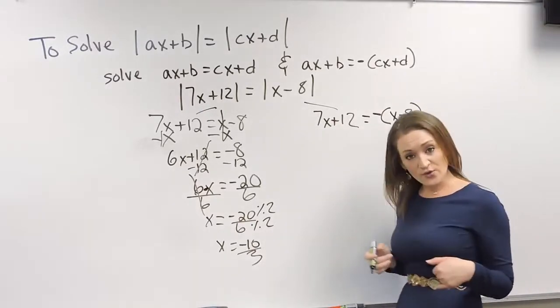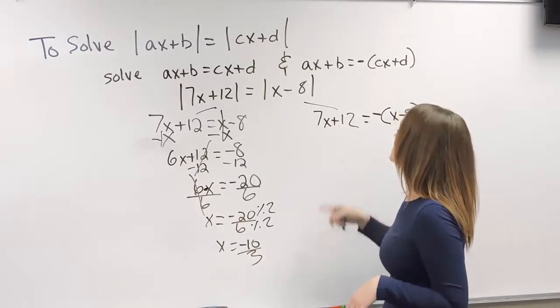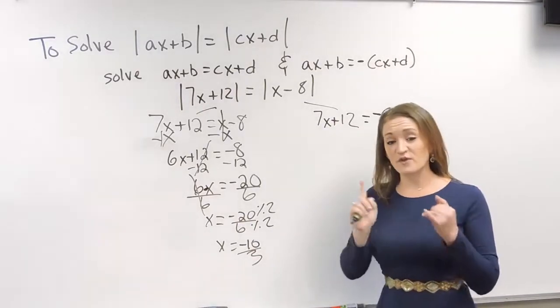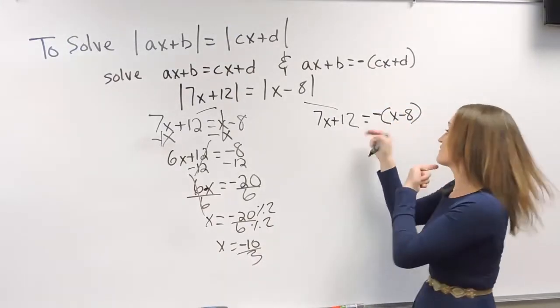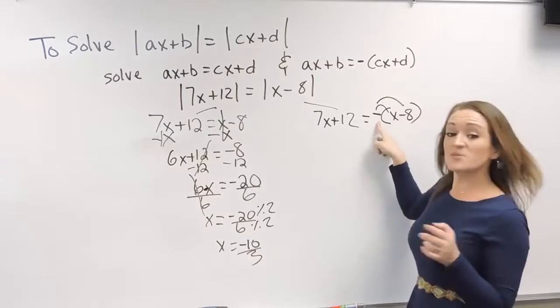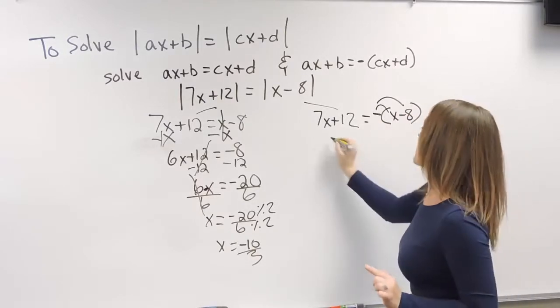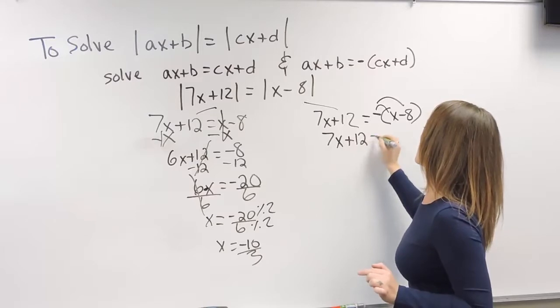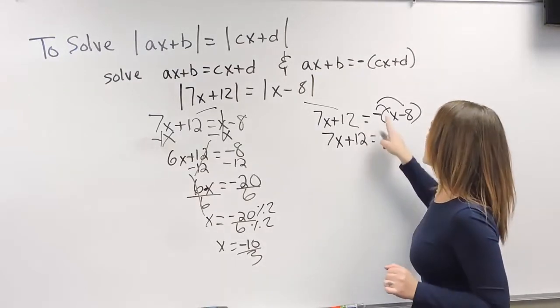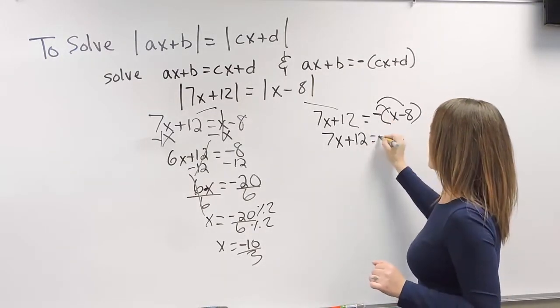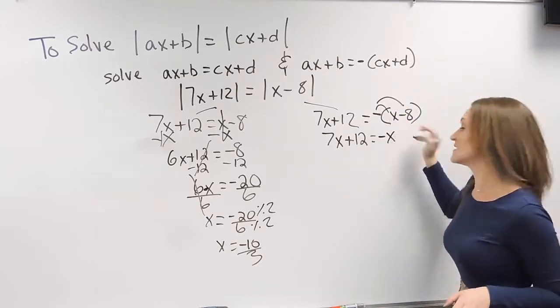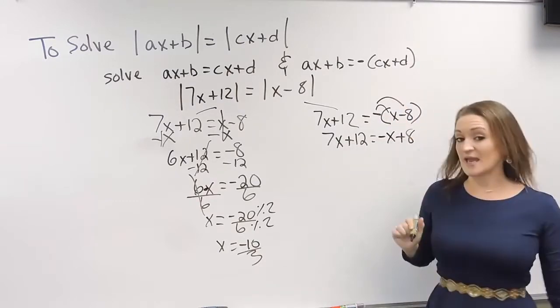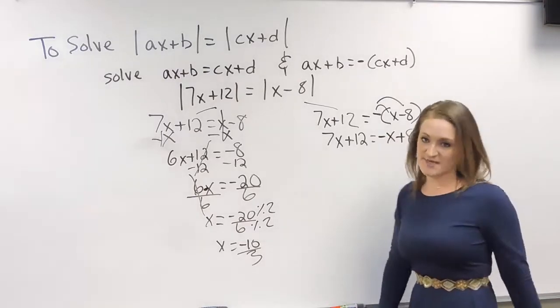So the other equation that we're going to solve, the first thing that you need to do is to take the opposite of that. So we need to distribute this negative over here. So I'm going to drop down the left-hand side for right now. On the right-hand side, a negative times an x makes that a negative x. And negative times negative 8 is now a positive 8. Now solve this equation.